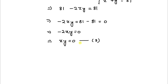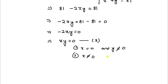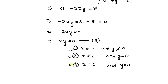Since xy equals 0, we can consider three cases: in the first case x equals 0 and y may not equal 0; in the second case x is not equal to 0 and y may equal 0; and in the third case both x equals 0 and y equals 0. In the next step let's check which values satisfy both equation 1 and equation 2.